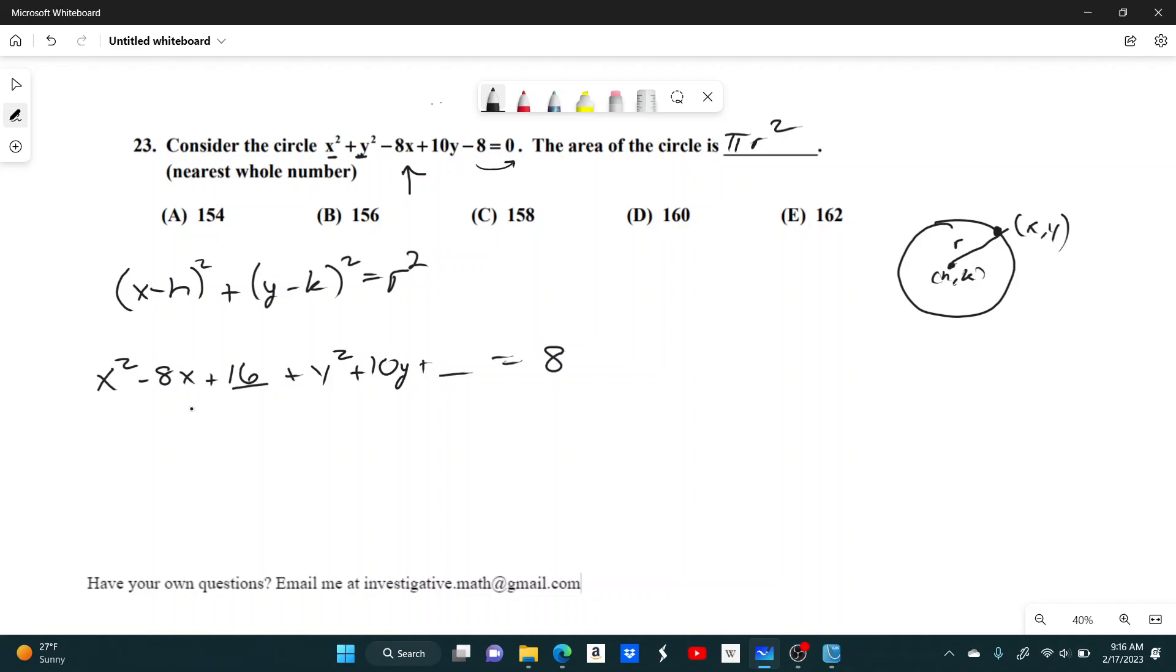And then for our second part, y squared plus 10y. So you divide 10 by 2, you get 5. Square that, you get 25.